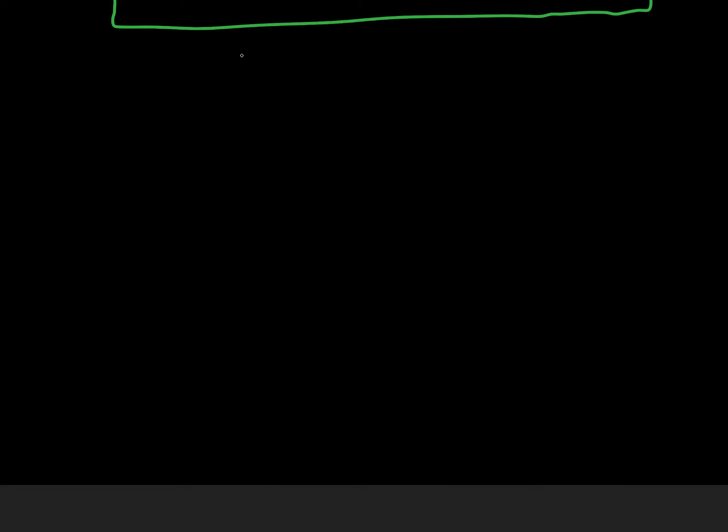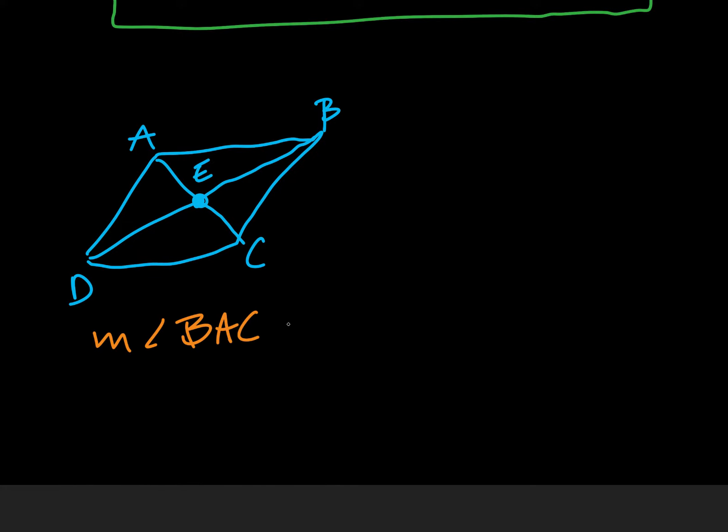Okay, now we're going to do some homework problems. So we're given a parallelogram and we're given the diagonals and it's A, B, C, D, and E. We're given the information that the measurement of B, A, C is equal to 50 and we want to know the measurement of D, C, A.